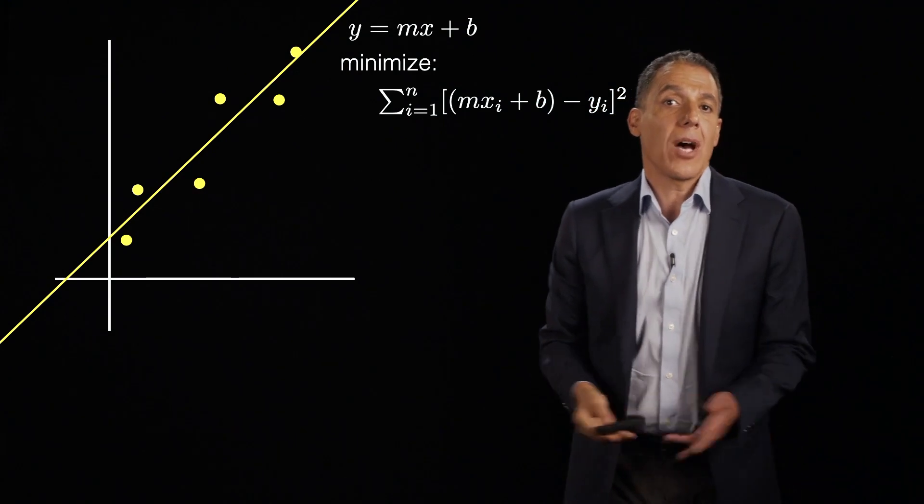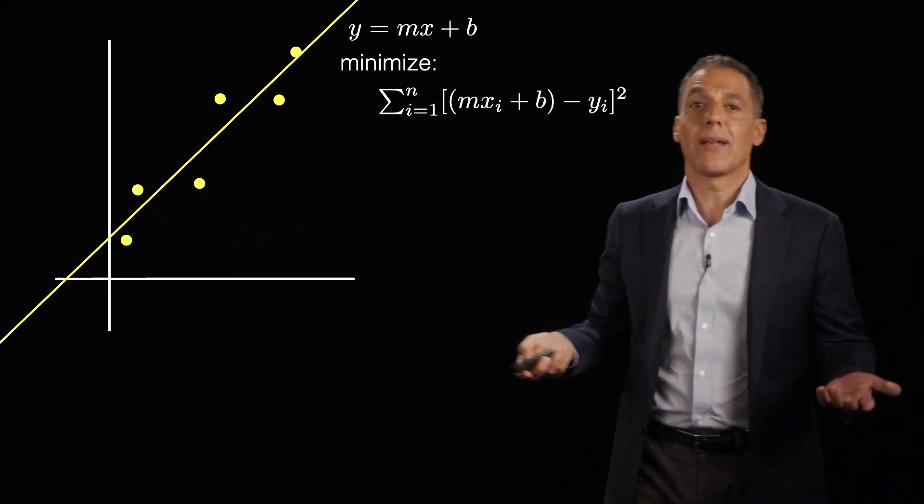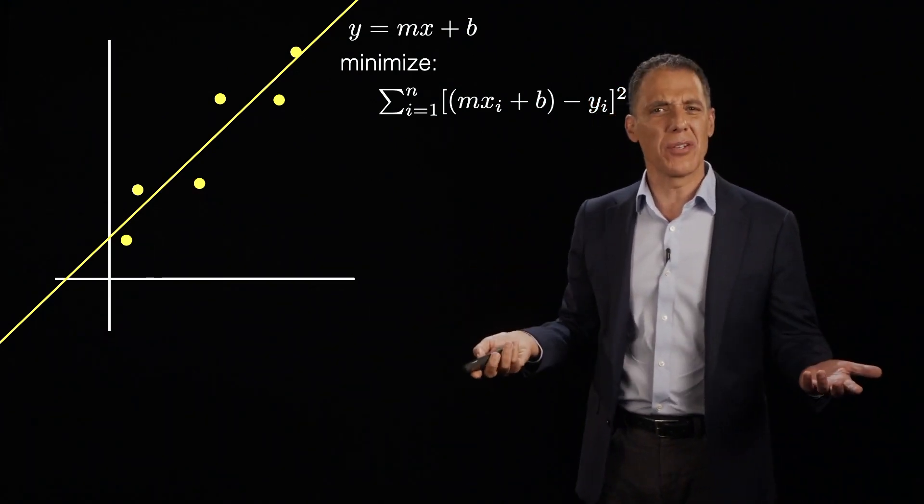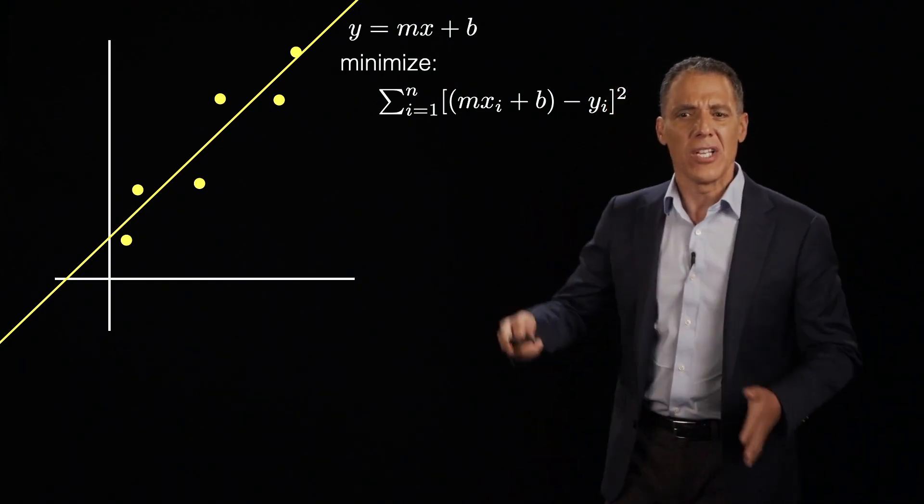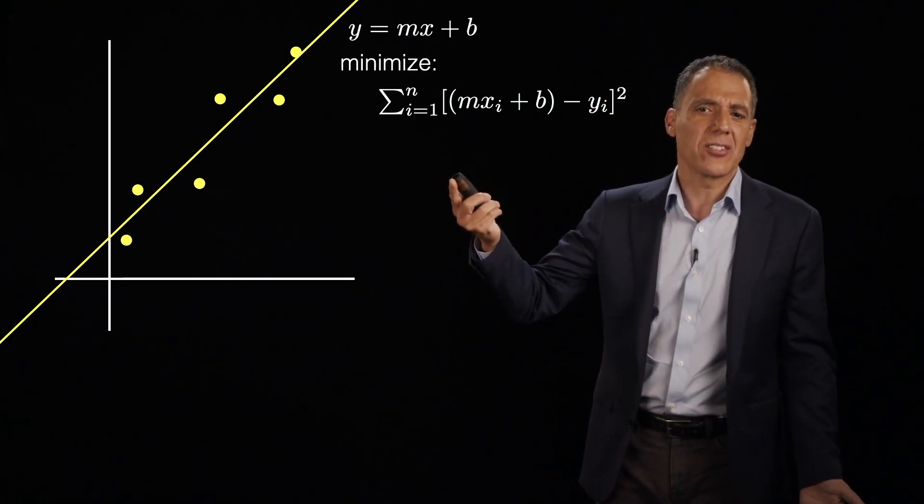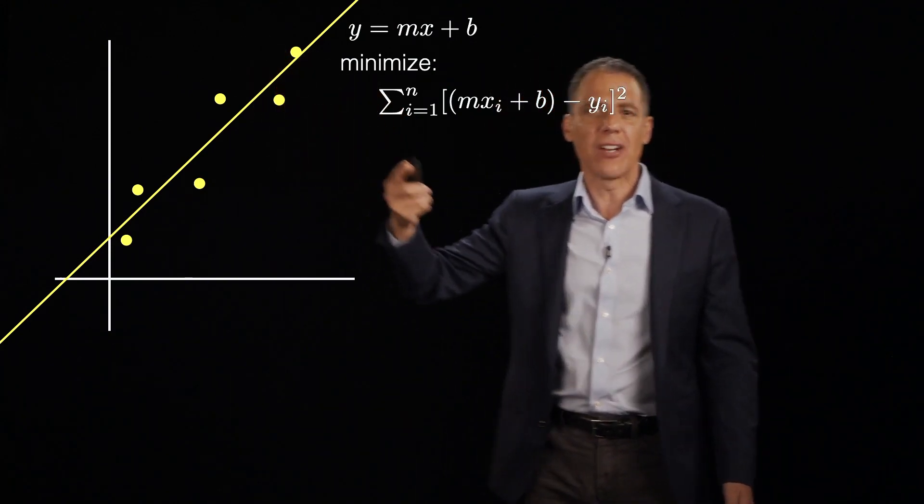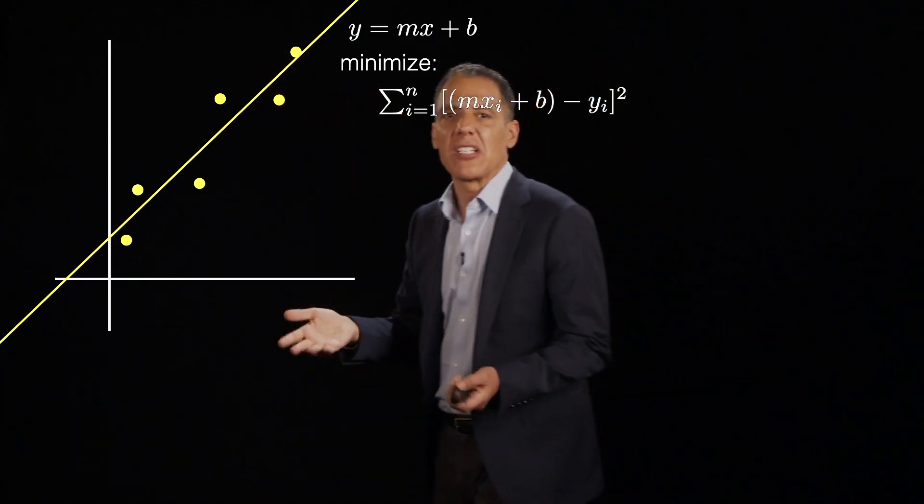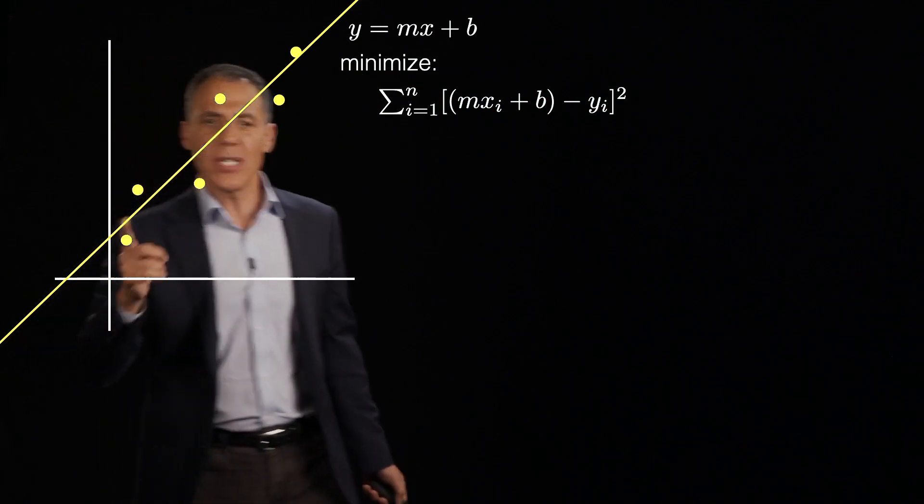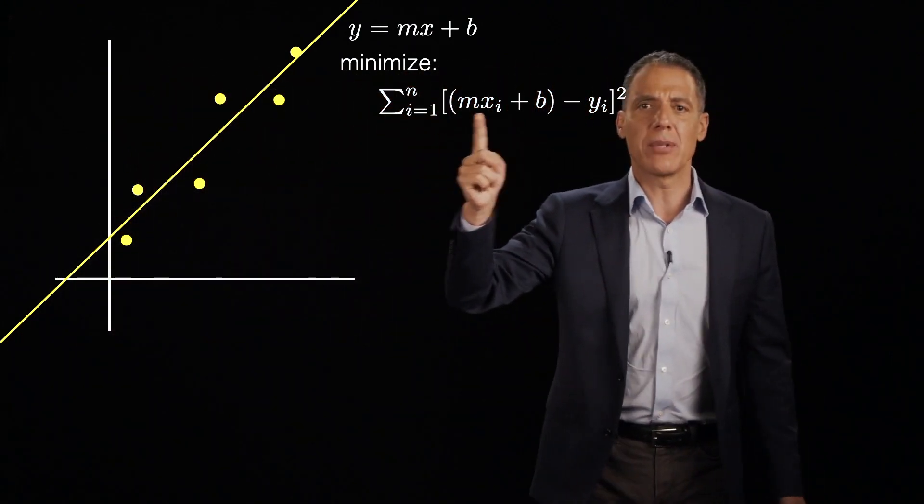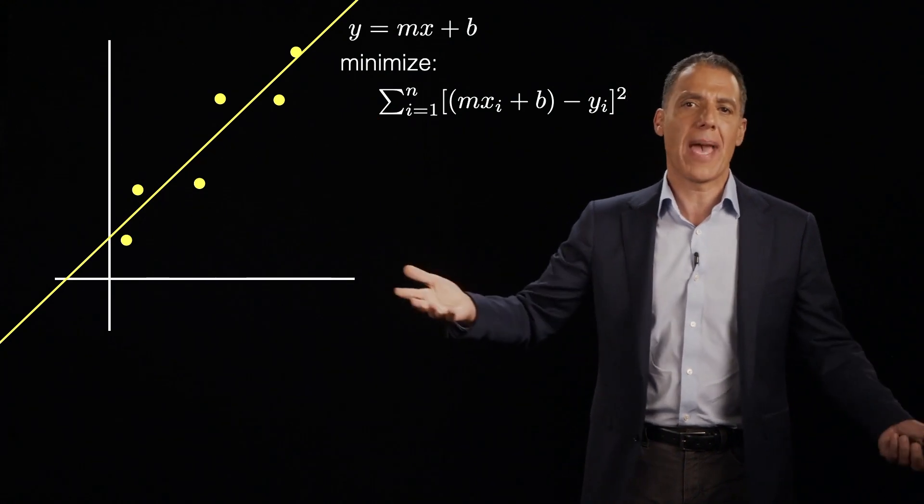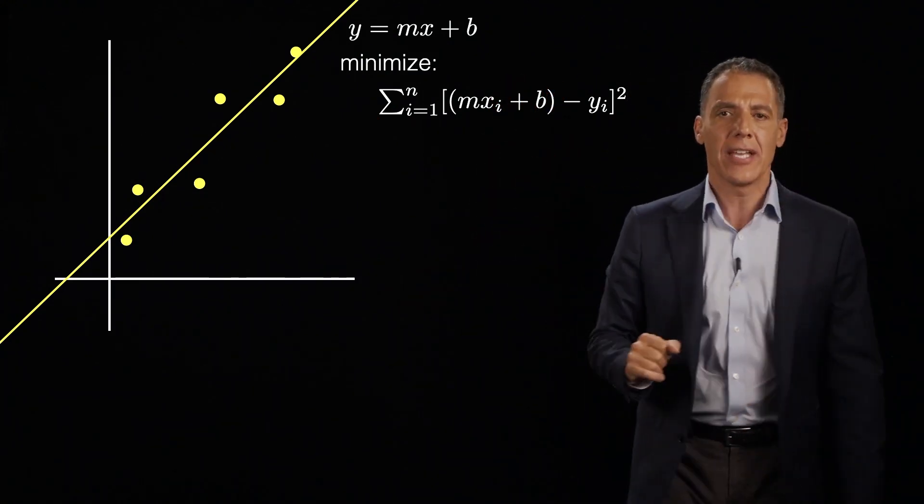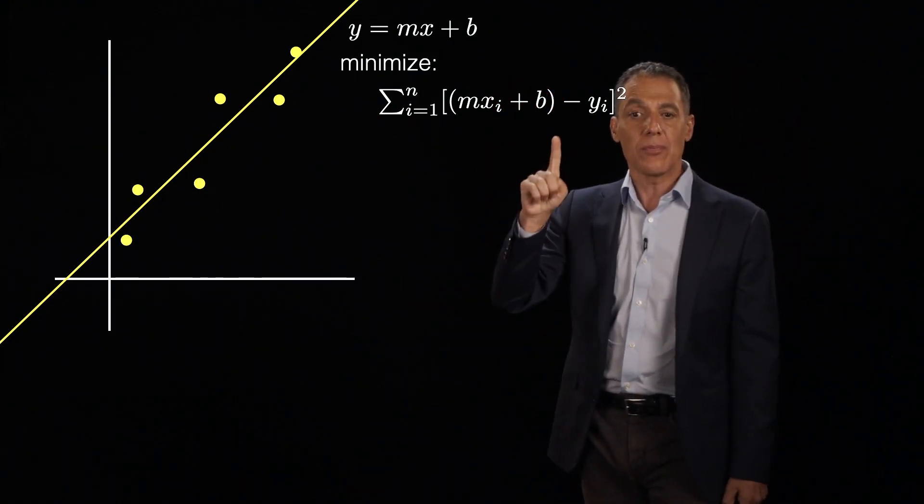Now, why the sum? Why not something else? Why not the product of them? The product would be weird because if one of them was zero, then the whole thing would be zero. So the sum sort of makes sense. I want the average error of these things to basically be minimal. And the reason, by the way, I don't have to put a 1 over m here is since I'm going to minimize this, the overall scale of the thing doesn't matter. I'm just going to try to drive this as small as possible. So there's my objective.